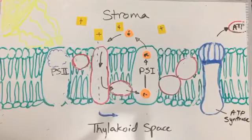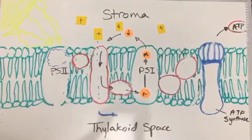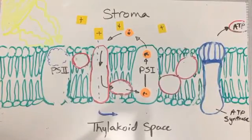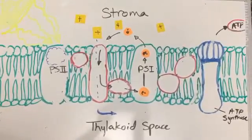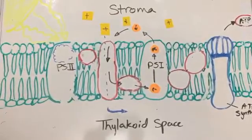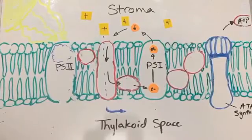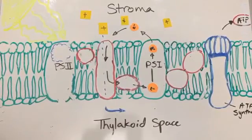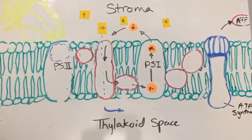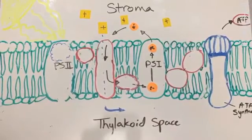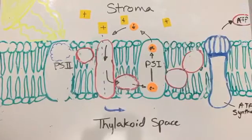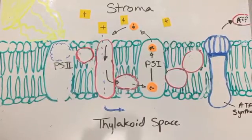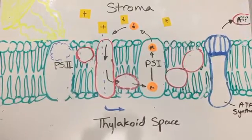Now we will show you how a cyclic photosynthetic light reaction occurs inside of a thylakoid membrane. A cyclic reaction occurs when there is no more NADP+ for electrons to form NADPH. Therefore, the electrons pass out through Photosystem I into the stroma.